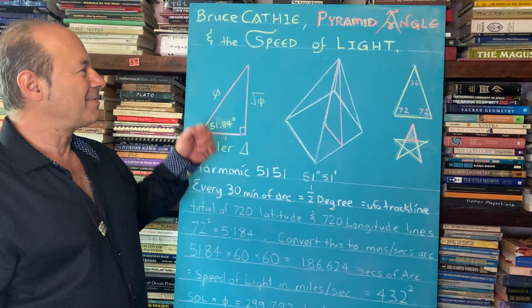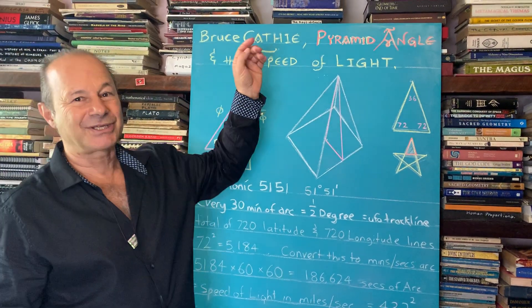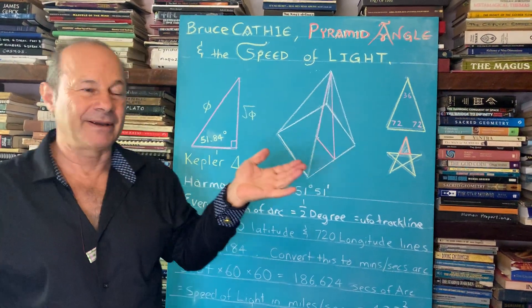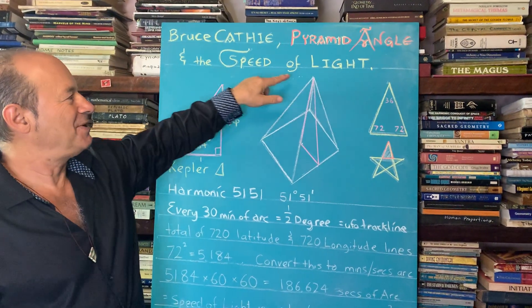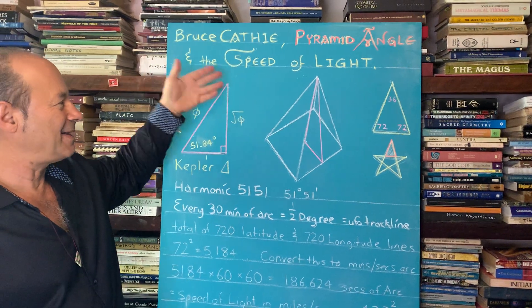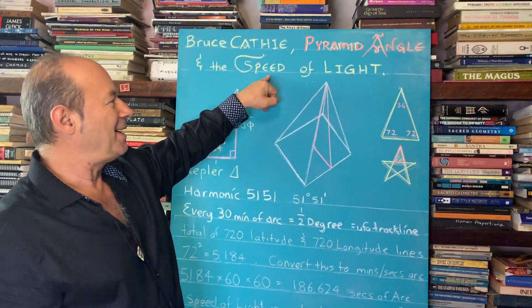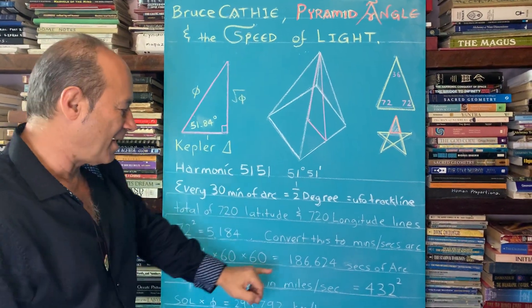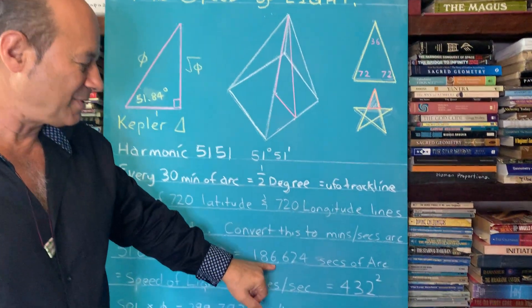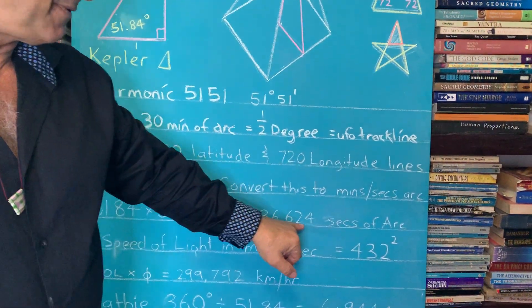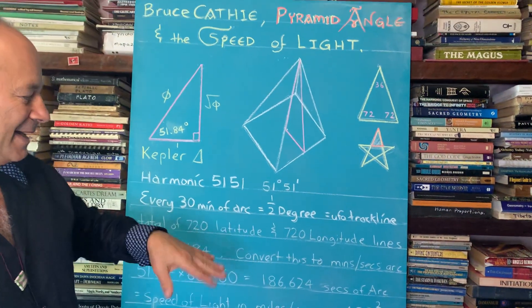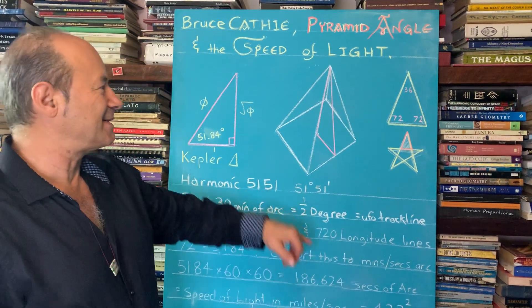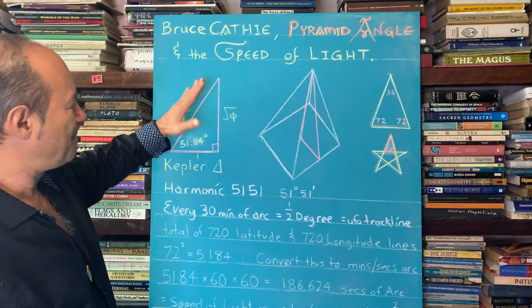I have an amazing lesson today. I'd like to make a very important connection between the pyramid angle, the one that we know in Giza, Egypt, and the speed of light. You would think, how can there be a connection between an angle in a pyramid and the speed of light? For those of you who do know the speed of light, it has a value of 186,624 miles per second. It's a big number, but how do we get that number from this pyramid angle?